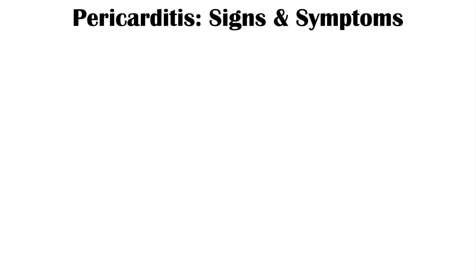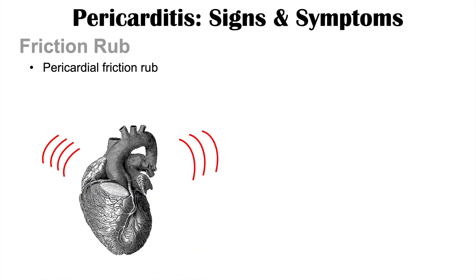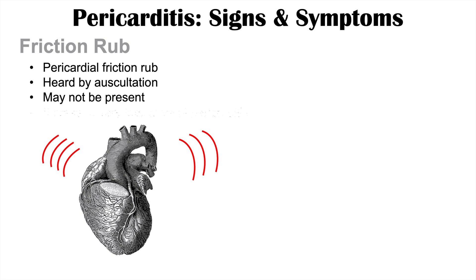There are two other important clinical findings with regards to pericarditis that a clinician will be able to assess. One is what we call a friction rub, or a pericardial friction rub, and this is going to be heard by auscultation. When a physician uses their stethoscope to listen to heart sounds, they may hear a rub caused by that inflamed pericardium. Although this is a classic clinical finding, it may not always be present. However, if a clinician does hear a friction rub, this is very indicative of and very specific to pericarditis.